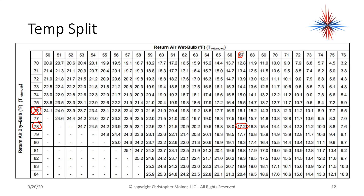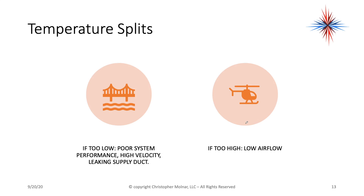If the temperature split is too low, we have poor system performance — we could have high air velocity, in other words air moving across the coil too fast, which could lead to a leaking supply duct. If it's too high, which is where we're at, we have low air flow. The longer the air sits on the evaporator coil, the colder it's going to get.